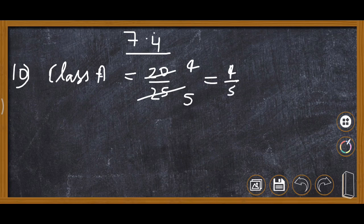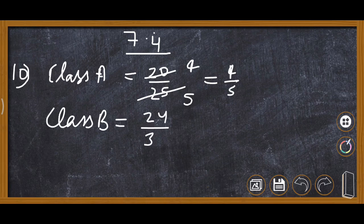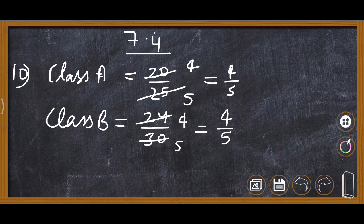In Class B, 24 students out of 30 passed, so the fraction is 24 upon 30. Simplifying: 6 fours are 24 and 6 fives are 30, so it also becomes 4 upon 5. Both Class A and Class B have the same fraction of 4 upon 5, so both classes have equal fractions getting first class.